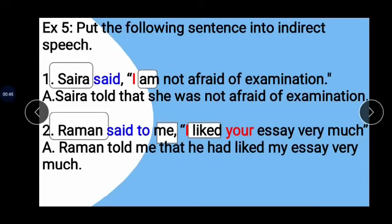Example 1: Saira said, 'I am not afraid of examination.' Here, the subject is Saira. After 'said' there is no object, so it is left unchanged. 'Said' is in past tense, so the verb in the reported speech changes. Saira is a girl, so 'I' changes to 'she' and 'am' changes to 'was.' Answer: Saira said that she was not afraid of examination.